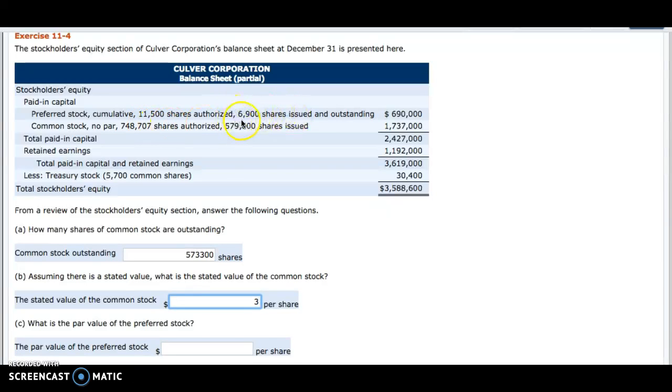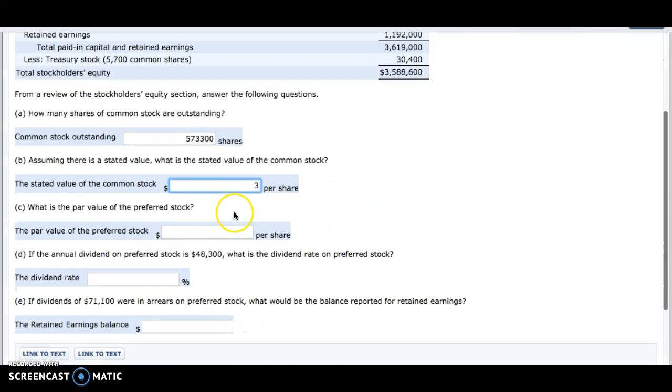So we'll take the value of the preferred stock and divide it by the number of issued shares, and that gives us a par value of $100 per share.